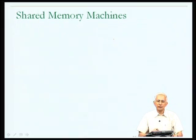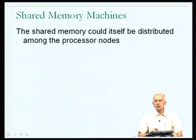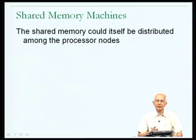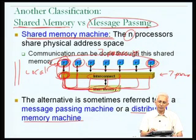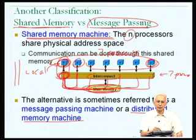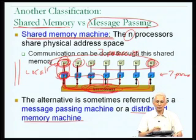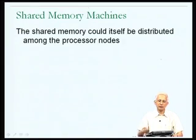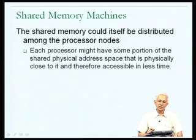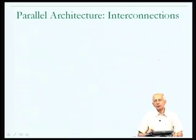An important part of parallel architecture is the interconnection mechanism. In general, there are two classes of interconnections. The interconnection is the mechanism through which processors, memories, and I/O devices are connected to each other. The first kind is called an indirect interconnect, where nodes are not connected directly to each other but rather all are connected to the interconnect. The alternative is a direct interconnect, where nodes are directly connected to each other.